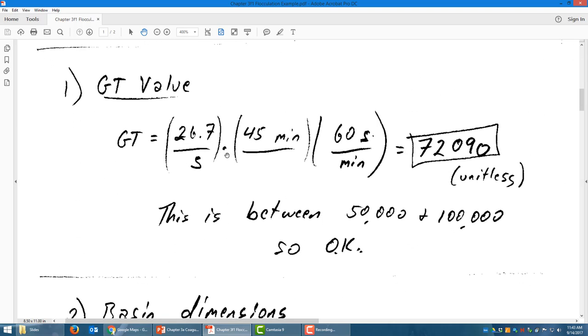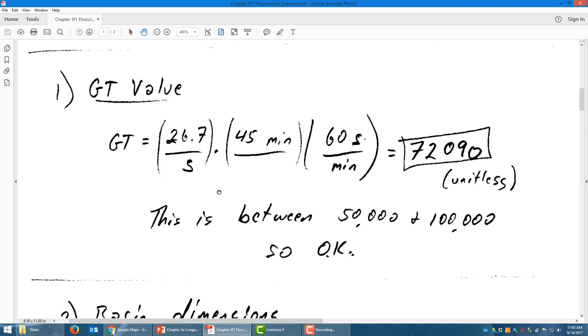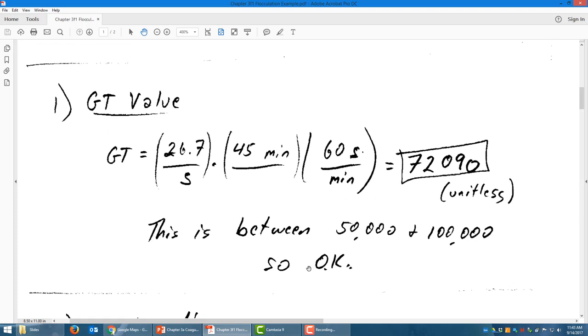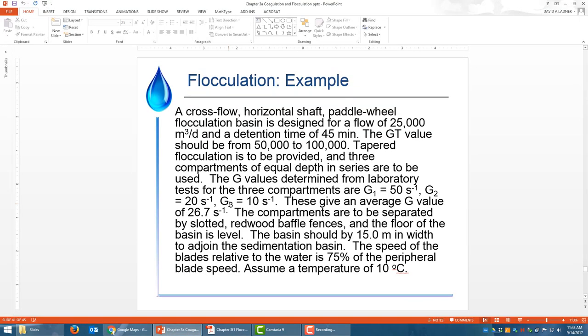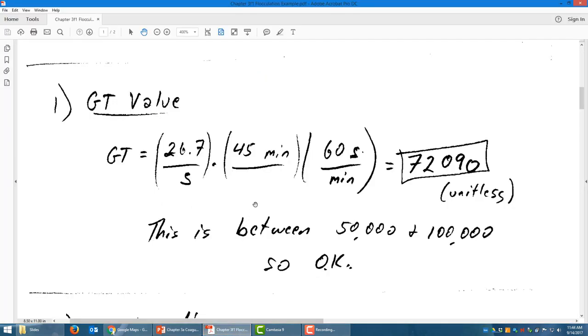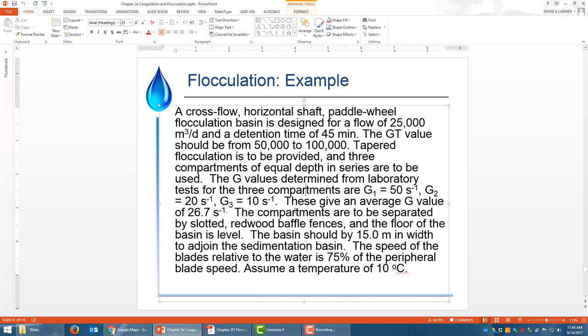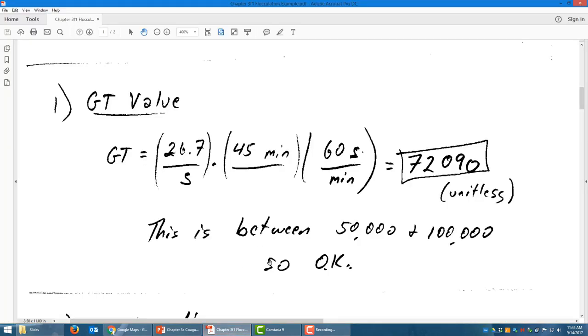The first thing, the first bullet point we needed to calculate was the GT value. GT value is simply the velocity gradient that's given to us times the residence time. We do a unit conversion, 60 seconds per minute, and we get 72,090. This is a unitless number because G is reciprocal seconds, T is seconds. This is between 50,000 and 100,000, so we're okay. Let's take a look and see where these numbers came from. 26.7 seconds, the average G value was given there, and 45 minutes retention time.